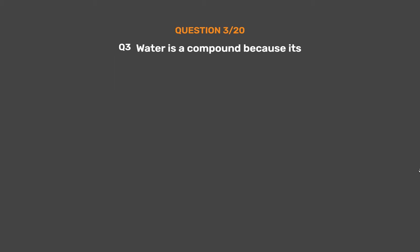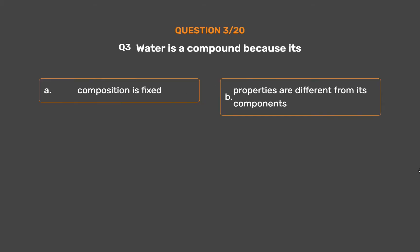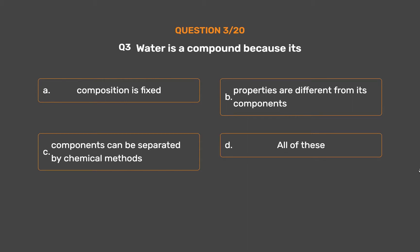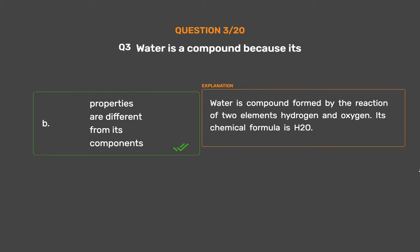Question number 3. Water is a compound because: Option A: Composition is fixed. Option B: Properties are different from its components. Option C: Components can be separated by chemical methods. Option D: All of these. The correct answer is Option B. Properties are different from its components. Water is a compound formed by the reaction of two elements, hydrogen and oxygen. Its chemical formula is H₂O.